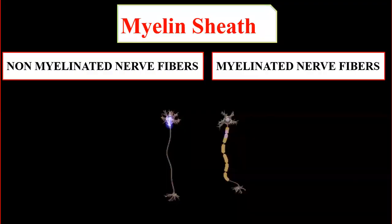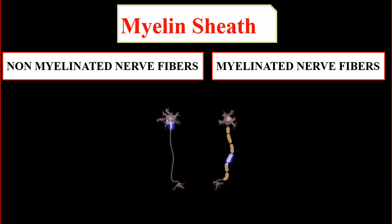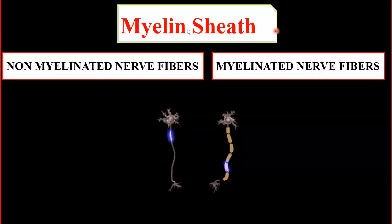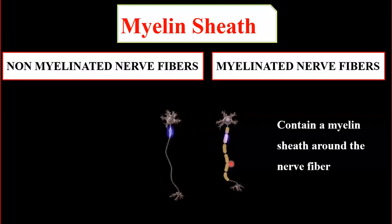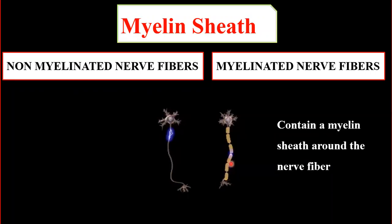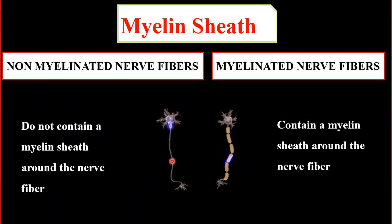The first difference is that, as the name indicates, myelinated nerve fibers are surrounded by a myelin sheath. The myelin sheath covers the body of the fiber and is made up of proteins and lipids. Non-myelinated nerve fibers, on the other hand, are not covered by a myelin sheath.